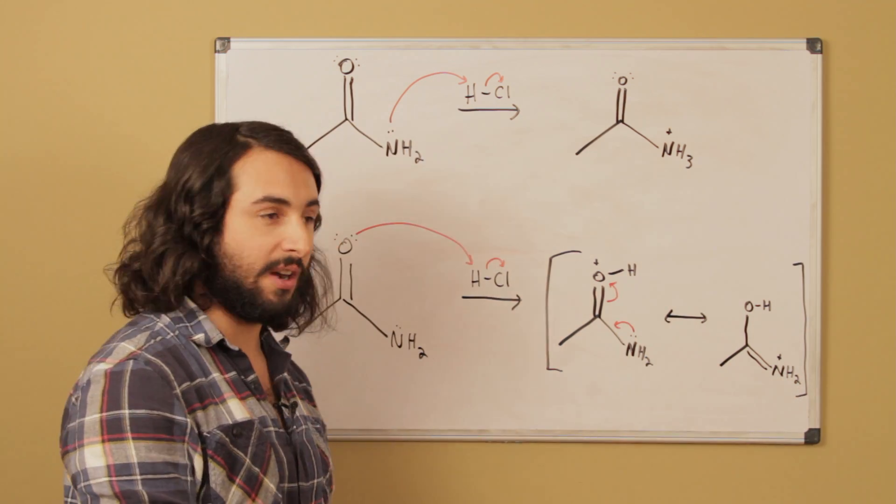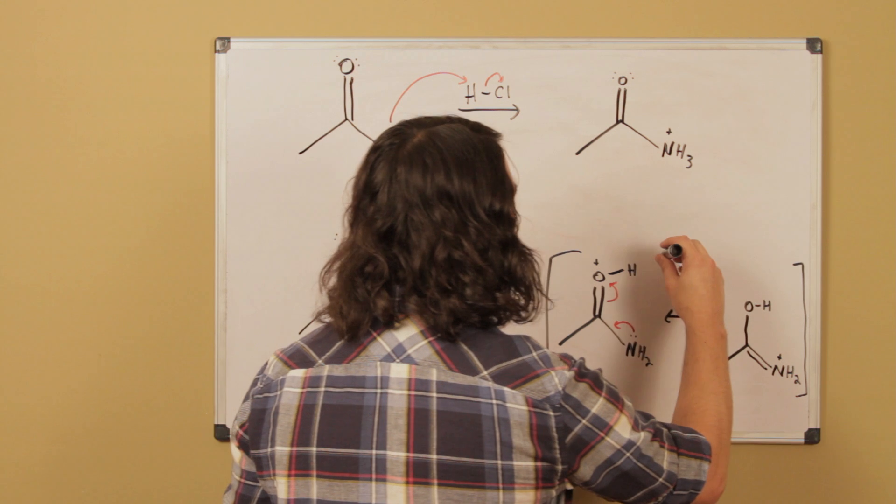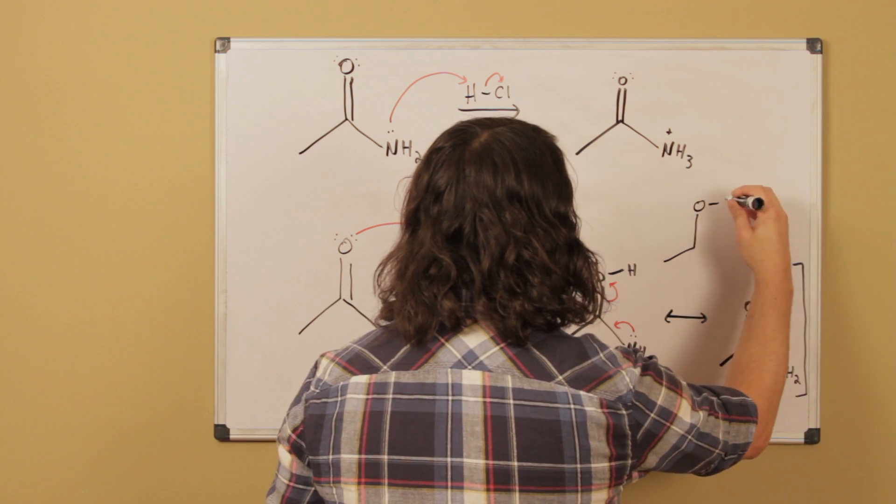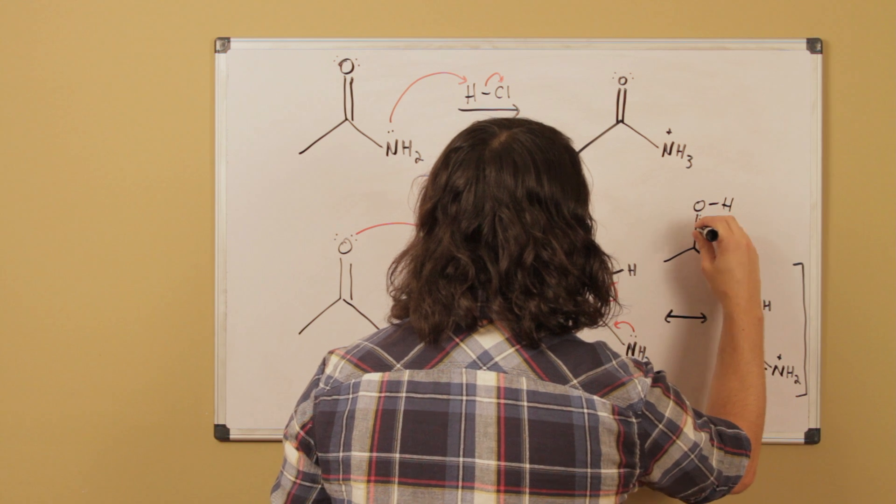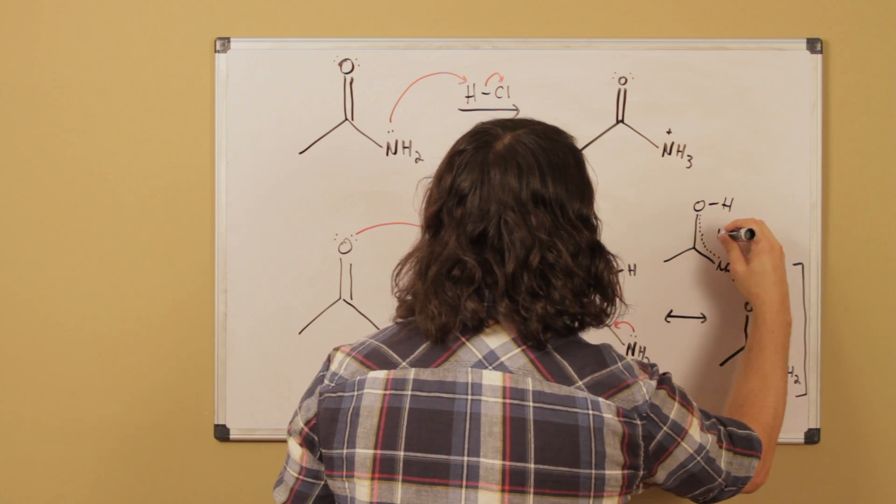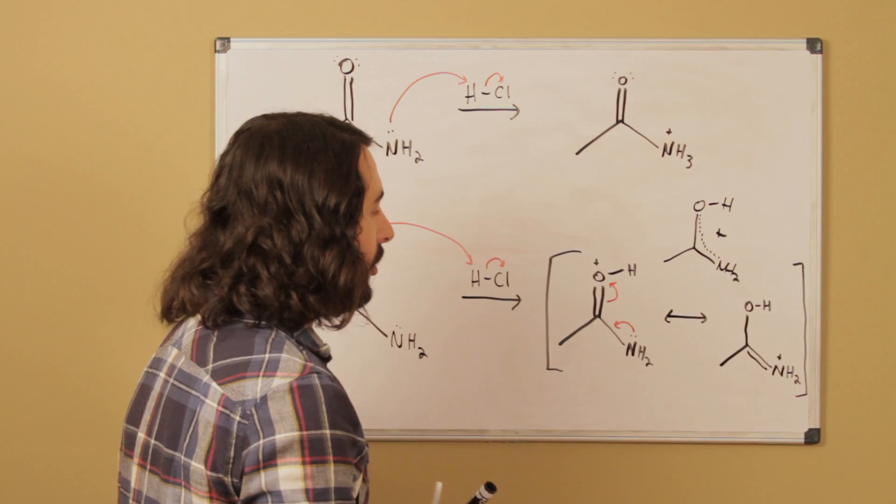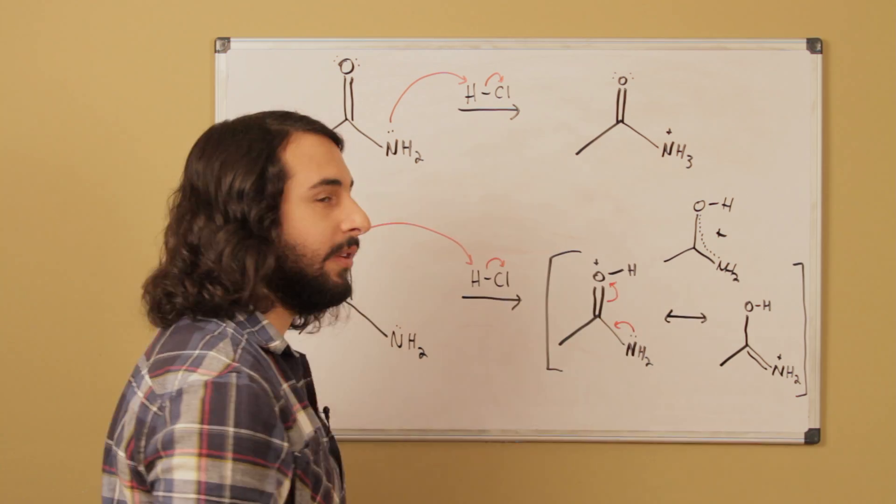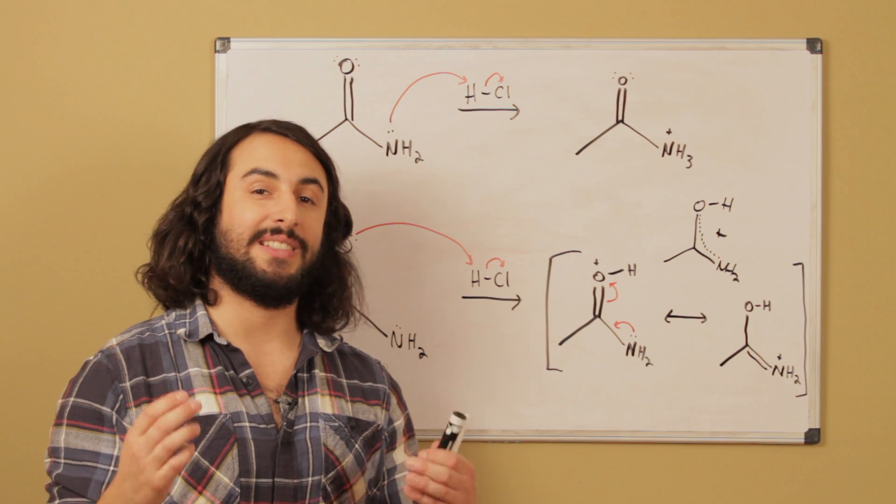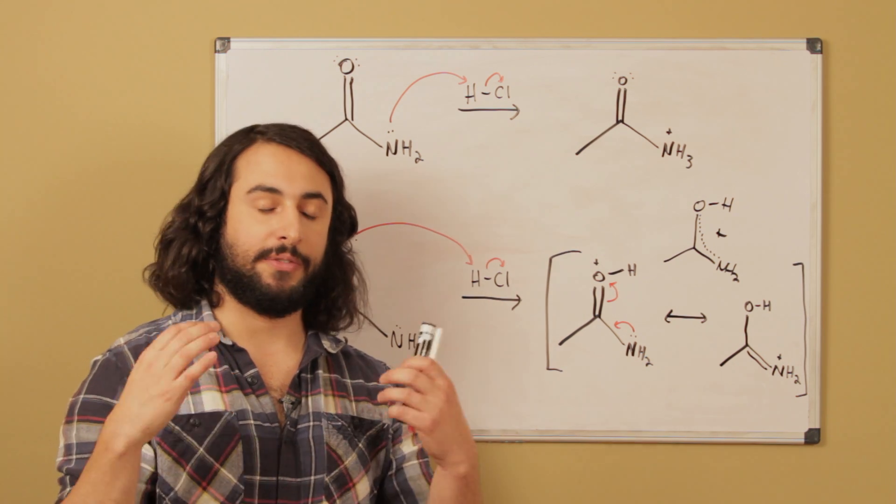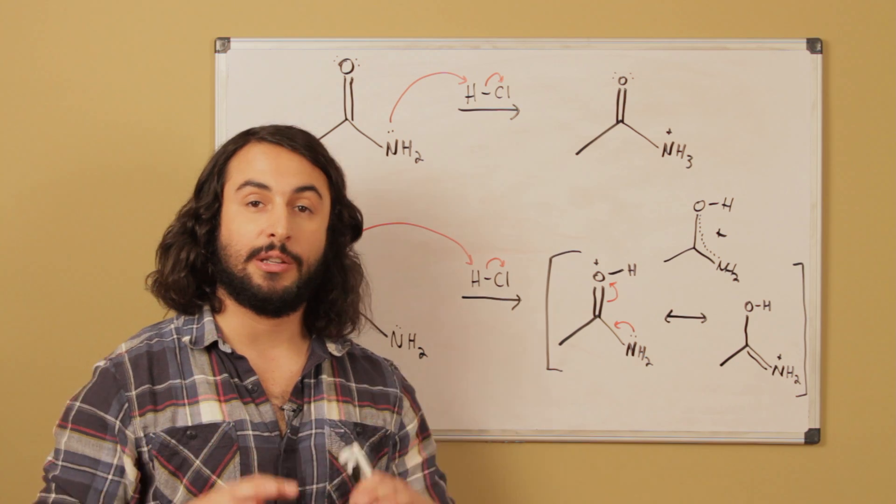And so what that means is that the composite resonance structure is actually going to look like this, where we have a delocalized positive charge right along that portion of the molecule. Now we know that formal charges that are resonance stabilized are more stable—they are at a lower energy.